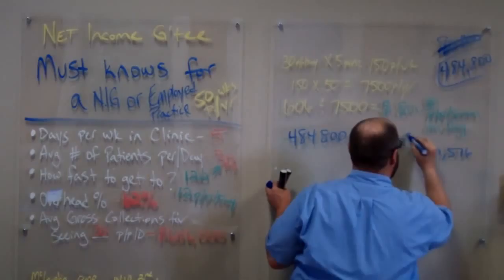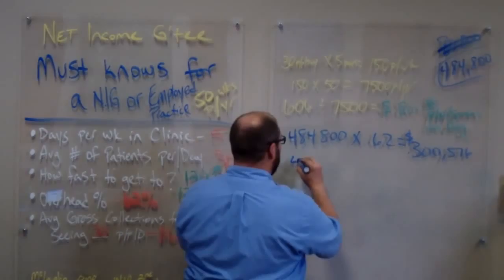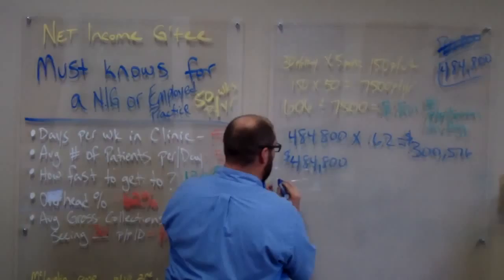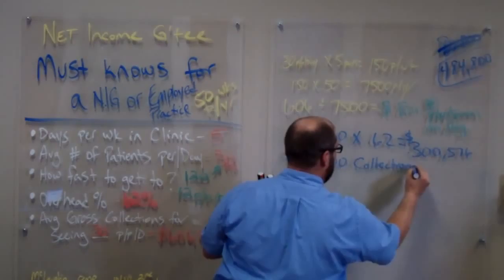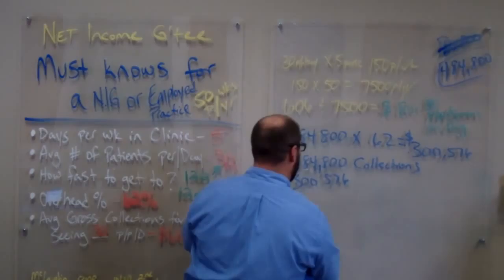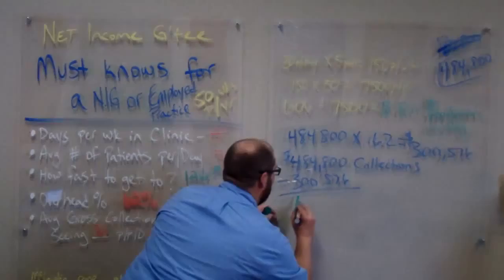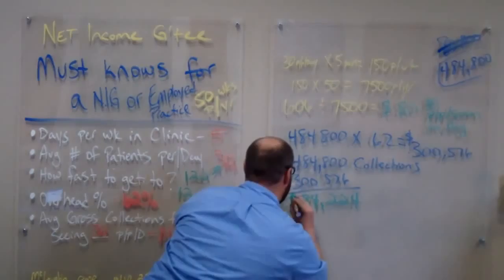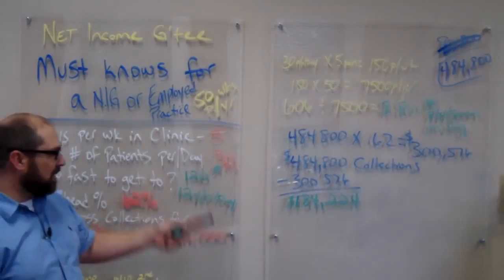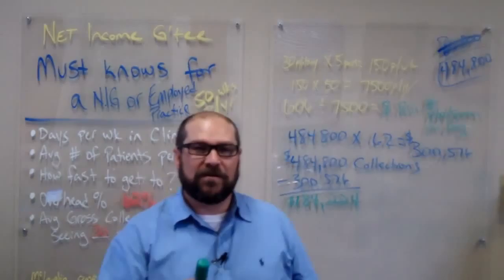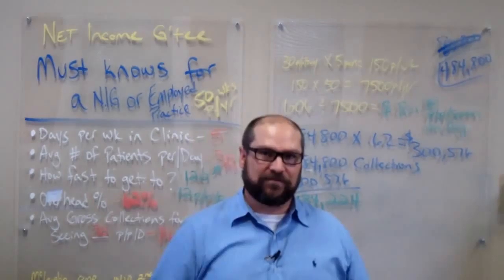We've got to find out what the overhead is. So we take total collections and we multiply it by 62%, which comes out to $300,000 and some change. So we take 4848, we subtract out the $300,000 and some change to get what's left over. And what's left over is $184,000 and some change.